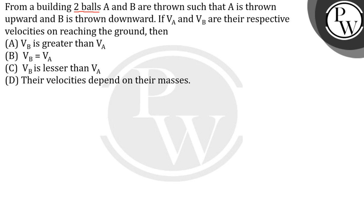Hello, the question given here is: From a building, two balls A and B are thrown such that A is thrown upward and B is thrown downward. If VA and VB are their respective velocities on reaching the ground, then we have to find out which option is correct.